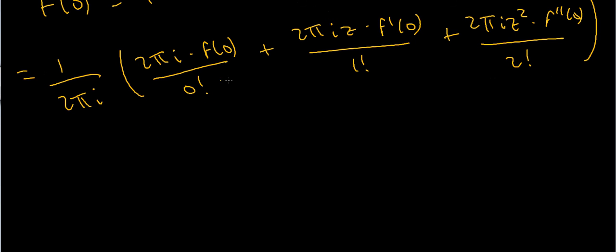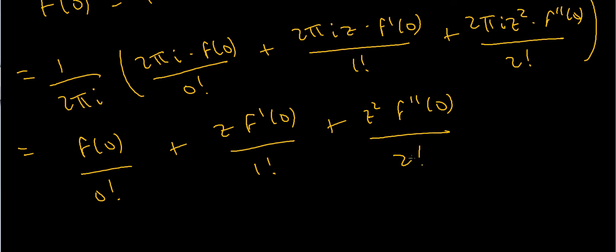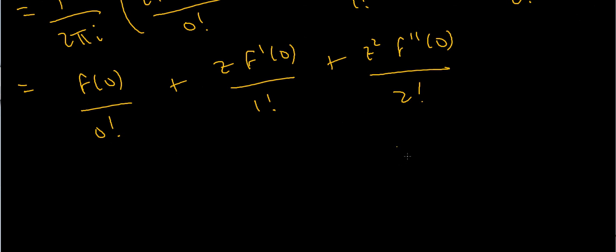Now we just have to compute this. I can cancel out the 2 pi i's quite easily. So I'm left with f of 0 divided by 0 factorial plus z times f prime of 0 divided by 1 factorial plus z squared, f double prime of 0 divided by 2 factorial. I know that f of 0, f prime of 0 and f double prime of 0 are all 1. And 0 factorial is 1, 1 factorial is 1, and 2 factorial is just 2. So this simplifies quite nicely to 1 plus z plus 1 half z squared.